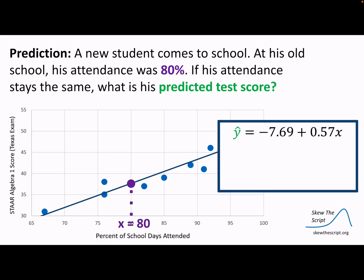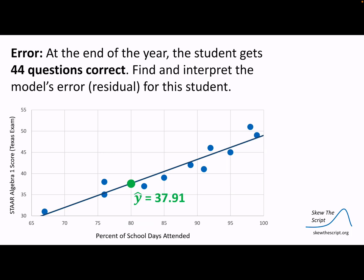If his attendance stays the same, what is his predicted value? So we notice here that when x is equal to 80, 80% of the time he's there, the value on that line ends up being about 37.9 on his test. But what actually happened, he actually got 44 questions correct. So there is his actual value versus his expected value at 37.91, and that difference right there is that little orange segment, and that's the residual.